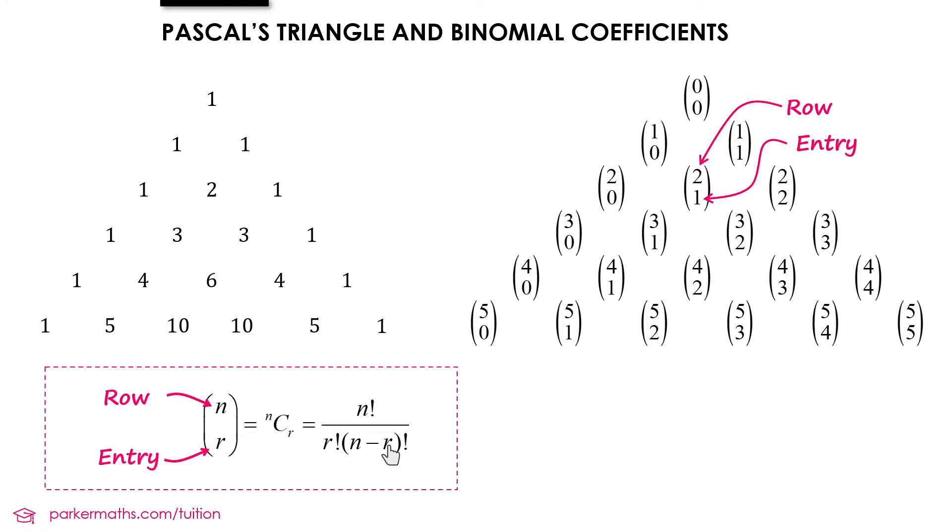Let's have a look at an example of actually calculating one of these binomial coefficients. Suppose we wanted to calculate 5 choose 3. Well, the n would be 5 and the r would be 3. So the formula says we do 5 factorial, put that on the top.